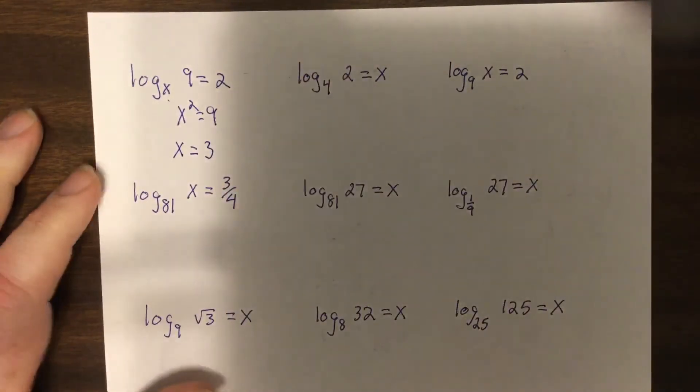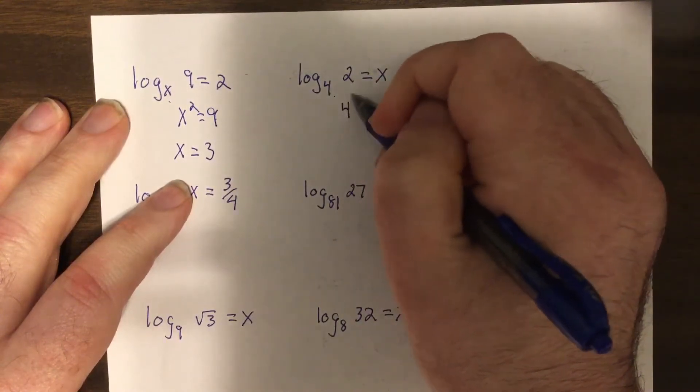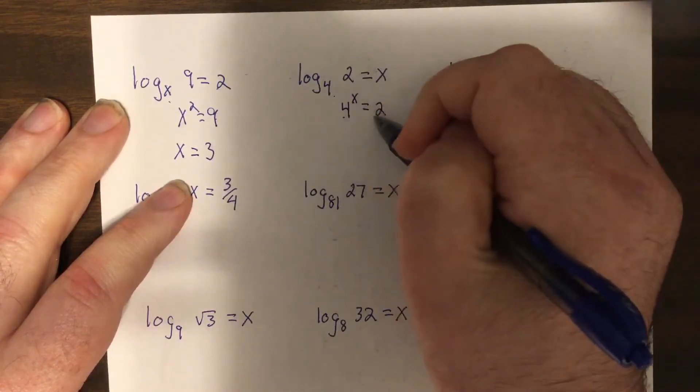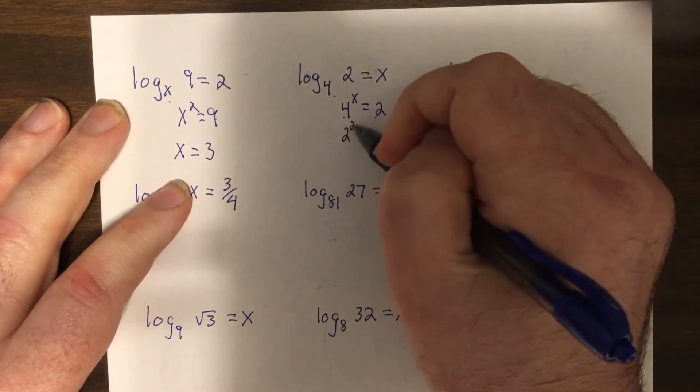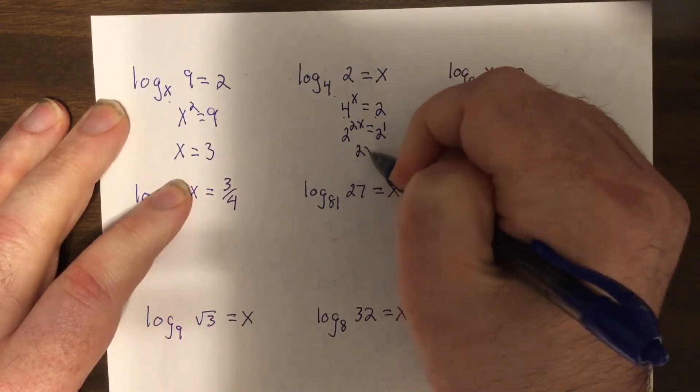So this one you go four to the x equals two, and we worked with exponentials to get the same base. Two to the two x equals two to the one, so two x equals one, so x equals a half.